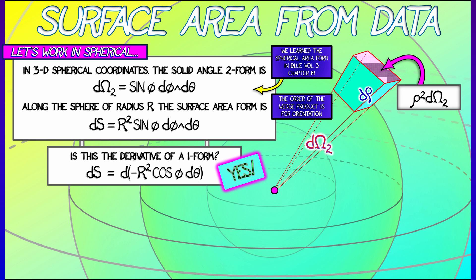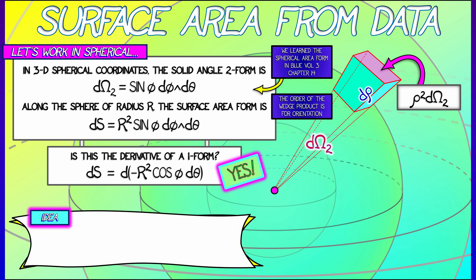If we want to compute the surface area of a region D on the sphere of radius capital R, then instead of doing that double integral, we can use Stokes' theorem to integrate this one-form, minus R² cos φ dθ, over the boundary of D.